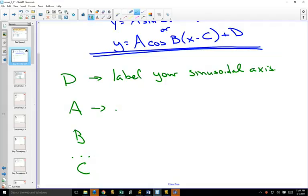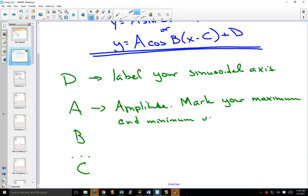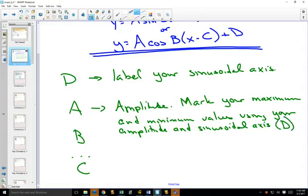A is your amplitude. You're going to mark your maximum and minimum values using your amplitude and your sinusoidal axis. So once you've labeled your center line, your amplitude goes up from that center line to your maximum and down from that center line to your minimum.